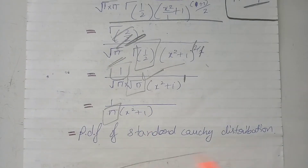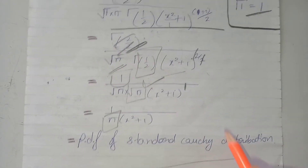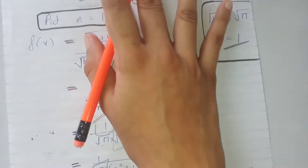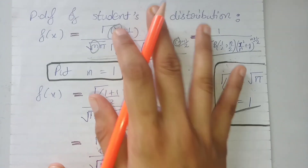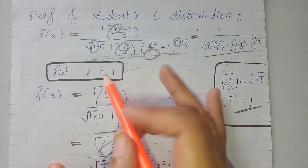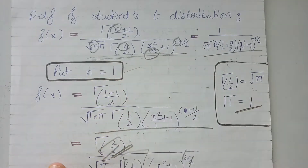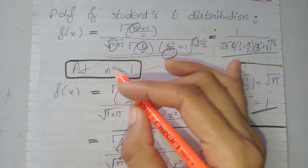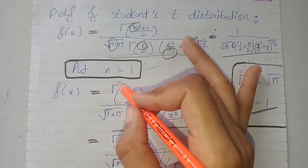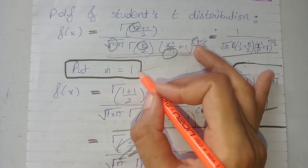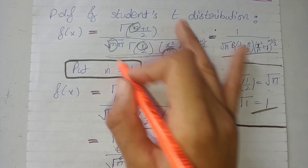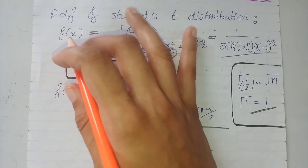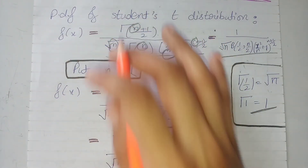This is the PDF of the standard Cauchy distribution, which we have derived from the PDF of the Student's t-distribution by placing n=1. This means that when the degrees of freedom of the Student's t-distribution equals 1, it approaches the standard Cauchy distribution.